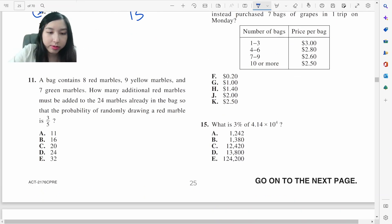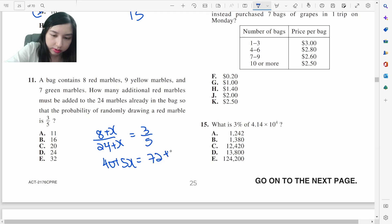The bag contains red marbles. What is the probability? Red marbles must be added. Right now, the red marble is 8 out of 24. They want to add more red marbles so that the probability is 3 fifths. If they add x red marbles, the total will also go up by x. 40 plus 5x equals 72 plus 3x. 2x equals 32, x equals 16.